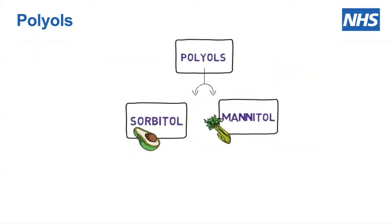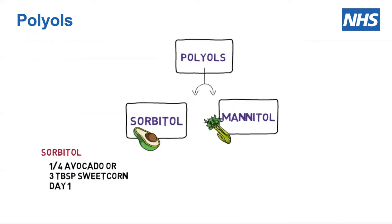Then you have polyols. Polyols are separated into two separate groups: sorbitol and mannitol. For the sorbitol group, we generally suggest you test with a quarter of an avocado. Alternatively, three tablespoons of sweet corn — or half a corn on the cob — would be a good option.